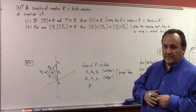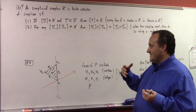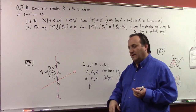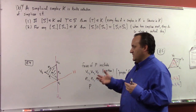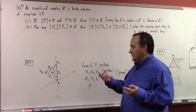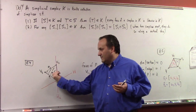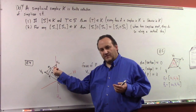It includes all of the faces of the polytope, as well as the condition that if you look at when any two edges meet — where do they meet? They meet at a vertex, which is again a face.